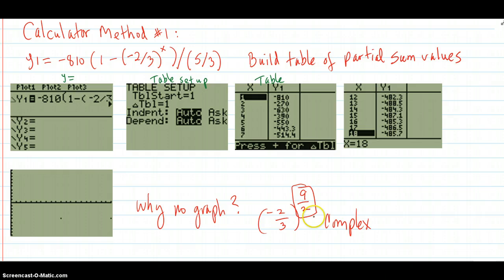Because negative 2 thirds to numbers like 9 halves and many other numbers that it will try to fill in are not in the real number system. They're in the complex number system. They have that i thing going. So you're not going to graph it. Because you're just going to get a blank graph with a couple of points here and there.